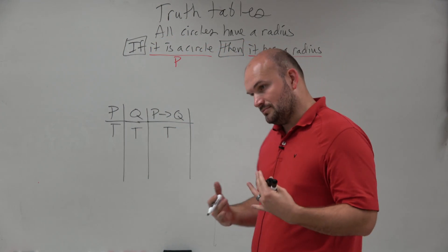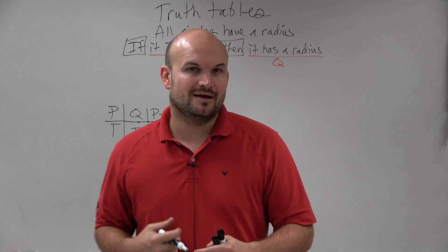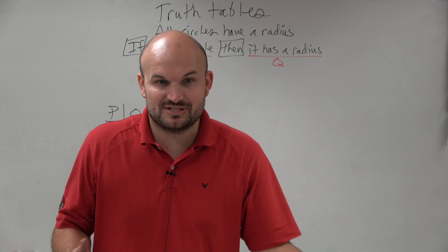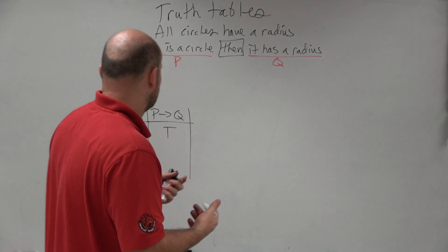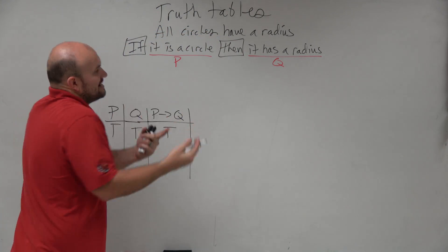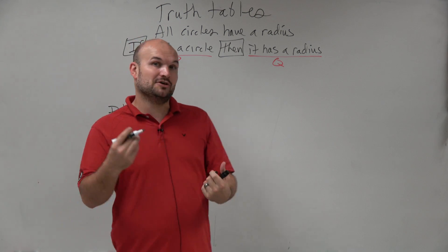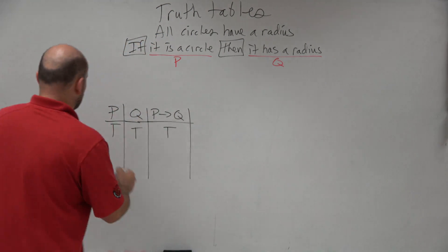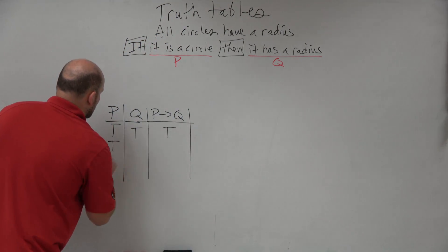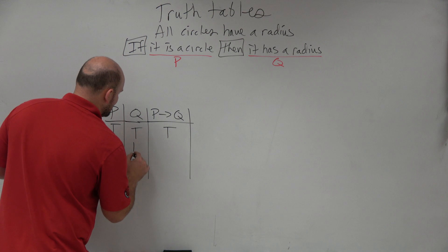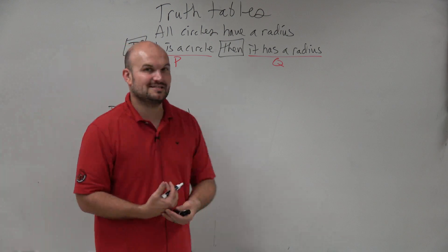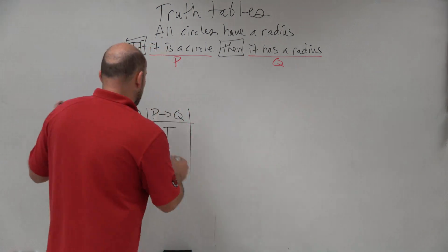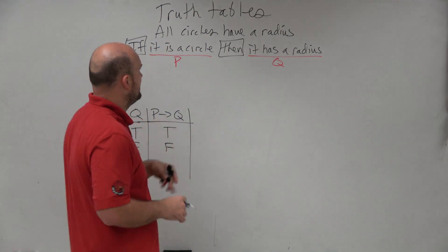However, if we say we have a circle — the hypothesis is true — but then we say it does not have a radius, which is obviously false, you know I'm lying. If a hypothesis says it's a circle, it has to have a radius. So if the hypothesis is true but the conclusion is false, the best way to think about it is: you're lying. Therefore, the statement is false.